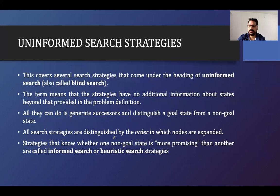We have two types of searching algorithms or searching strategies. The first category is uninformed searching techniques, and the second one is informed search strategy. First we'll see all the algorithms related to uninformed search, and after that we'll see how informed search is different from uninformed search.